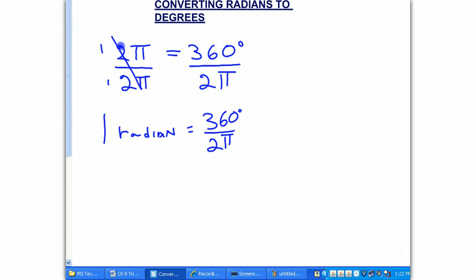And we could reduce this, and I think that would be smart. We divide by 2 into the numerator and denominator. We get 180 degrees. So finally, we get 1 radian is equal to 180 over π degrees.